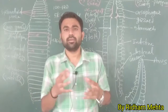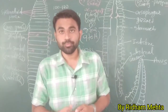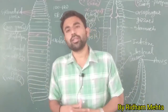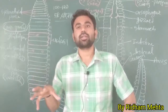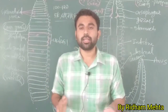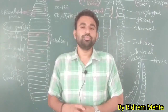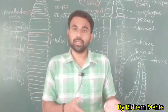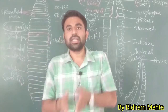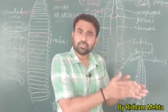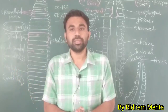Different cells join together and perform a common function to form a tissue. Different tissues accumulate together to form an organ. These organ systems arrange in a particular manner to create systems like the digestive system. We can compare the digestive system of earthworm, cockroach, and frog to understand the differences and similarities between them.